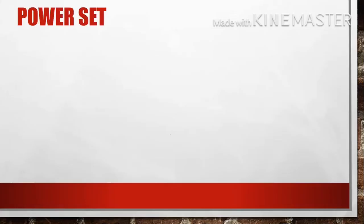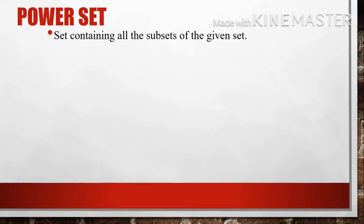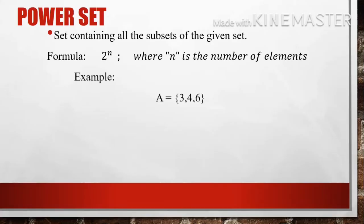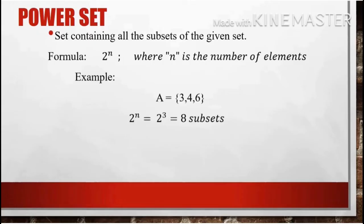Next, we have the power set — the set containing all the subsets of a given set. In the power set, we can find how many subsets there are in a given set using the formula 2 raised to N, where N is the number of elements. For example, set A whose elements are 3, 4, and 6 has 3 elements, so we compute 2 raised to 3, which equals 8. There are a total of 8 subsets in set A.